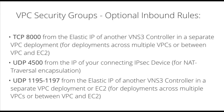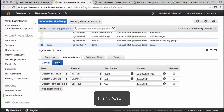Some optional rules are TCP 8000 from the IP address of your other VNS3 devices that you plan to mesh together. You'll also need to add UDP 4500 if you plan to use NAT traversal, and UDP 1195 through 1197 for other VNS3 devices in separate VPCs that you plan to connect. Click save.